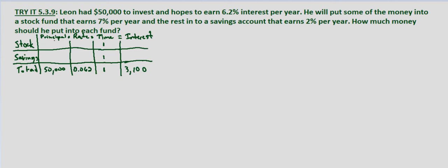Let's let S equal the principal amount for stocks. We're given that the rate is 7% per year, so 0.07, and the interest is going to be 0.07 times S. For savings — since we've already used S — we'll use B for the principal amount put into the savings account. We're given the interest rate is 2%, so the interest is 0.02 times B.